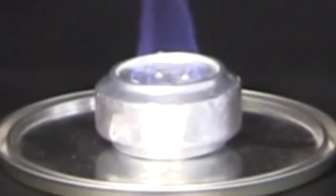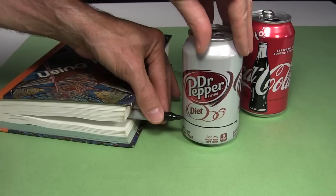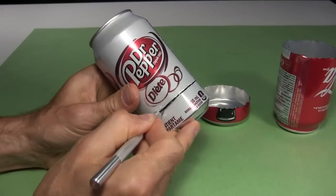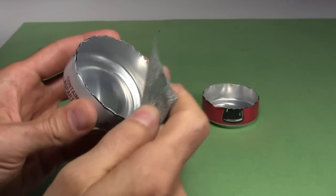To make the alcohol stove I start with these two cans. I first mark each around 1 1/8 inches or three centimeters up from the bottom. Then I cut those bottoms off and sand the edges to clean them up a bit.